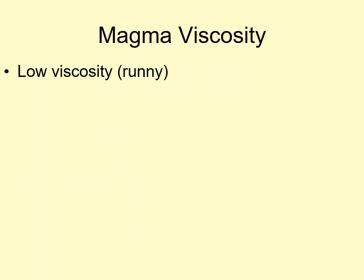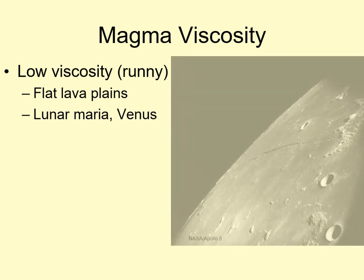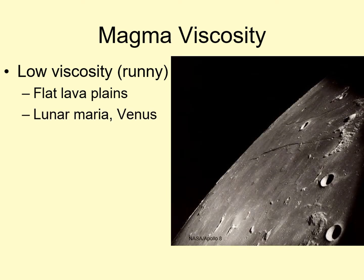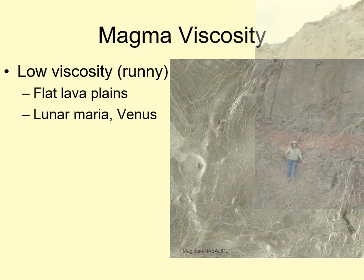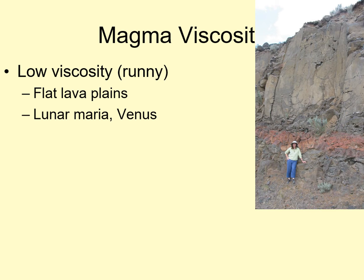Low viscosity magma is the most fluid. Water volcanoes and very fluid rock magma fit this category. Low viscosity magma produces flat lava plains and rivers of lava. We see examples of this in places like the lunar maria — the dark, flat regions on the near side of the moon — and on much of the surface of Venus. Much of the Earth's ocean crust is also made from low viscosity magma, as well as some features on continents.